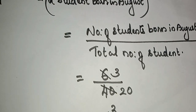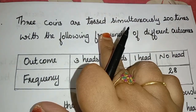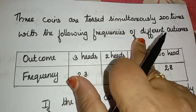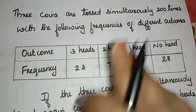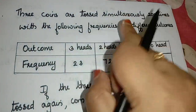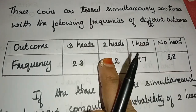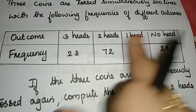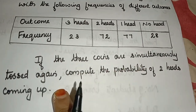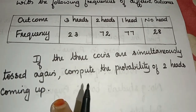Now we have a second question. 3 coins are tossed simultaneously 200 times with the following frequencies of different outcomes. If the 3 coins are tossed again, compute the probability of 2 heads coming up.